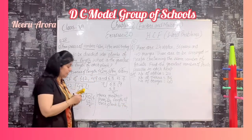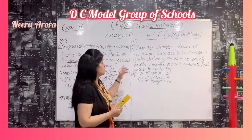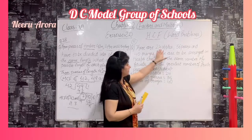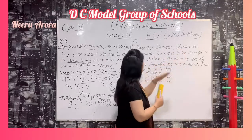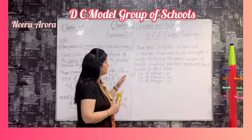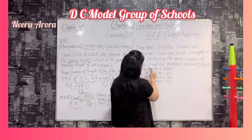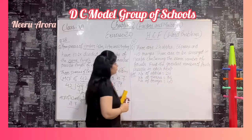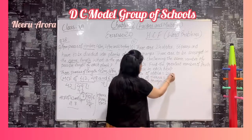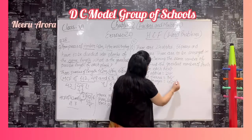Now come to the second question, which is similar to question 31 of your textbook. There are 24 apples, 36 pears, and 40 oranges. These are to be arranged in heaps containing the same number of fruits. Find the greatest number of fruits possible in each heap.